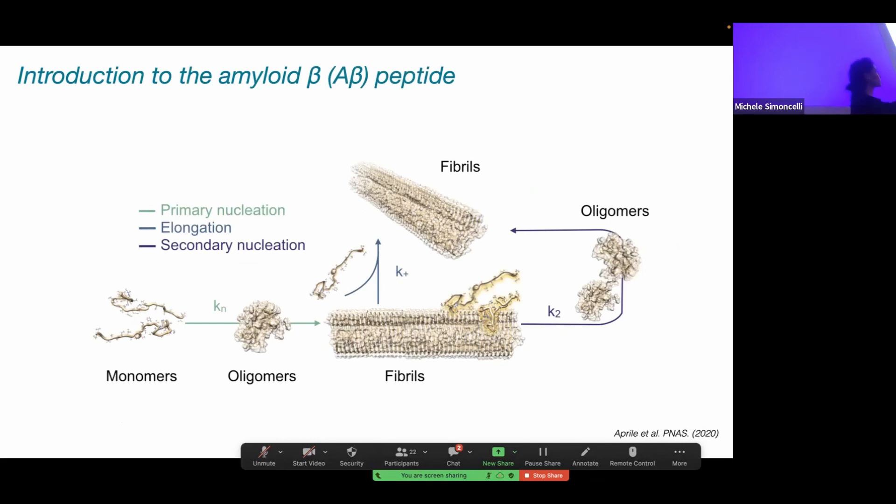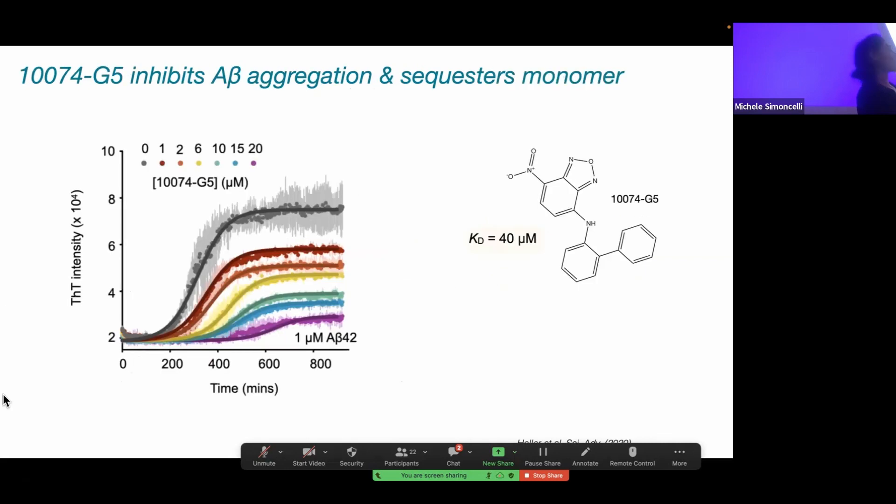I've mentioned that amyloid beta is an intrinsically disordered protein that undergoes this complex self-assembly. In particular, intrinsically disordered monomers will first self-associate into these small oligomeric species and then get converted into these fibrillar species via a process we call primary nucleation. Once a critical concentration of fibrils is reached, the surface of the fibrils can actually act as a positive feedback loop to rapidly generate many more fibrils via a process we call secondary nucleation. Importantly, the intrinsically disordered monomer is involved in both primary and secondary nucleation, and intrinsically disordered monomers can grow the fibrils in length via a process called elongation.